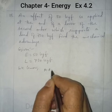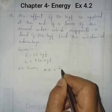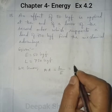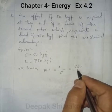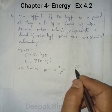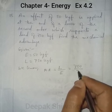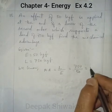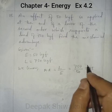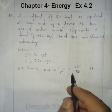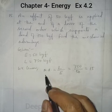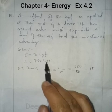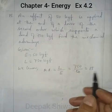Mechanical advantage = load / effort. Load is 750 kgf and effort is 50 kgf. When we divide, we get 15. So mechanical advantage = 15. There is no unit, because the kgf in the numerator and denominator cancel out.